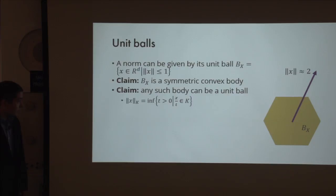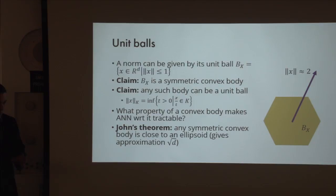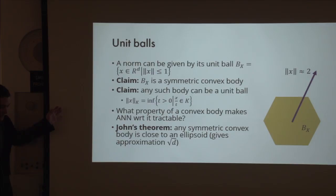John's theorem says that any symmetric convex body is close enough to an ellipsoid, giving approximation square-root D—you can think of an ellipsoid. So we started wanting to understand ANN for all metrics, then moved to norms because they're nicer. Our result says that if your norm is not just general but symmetric, then for any symmetric norm there are very good data structures for approximate nearest neighbor search.